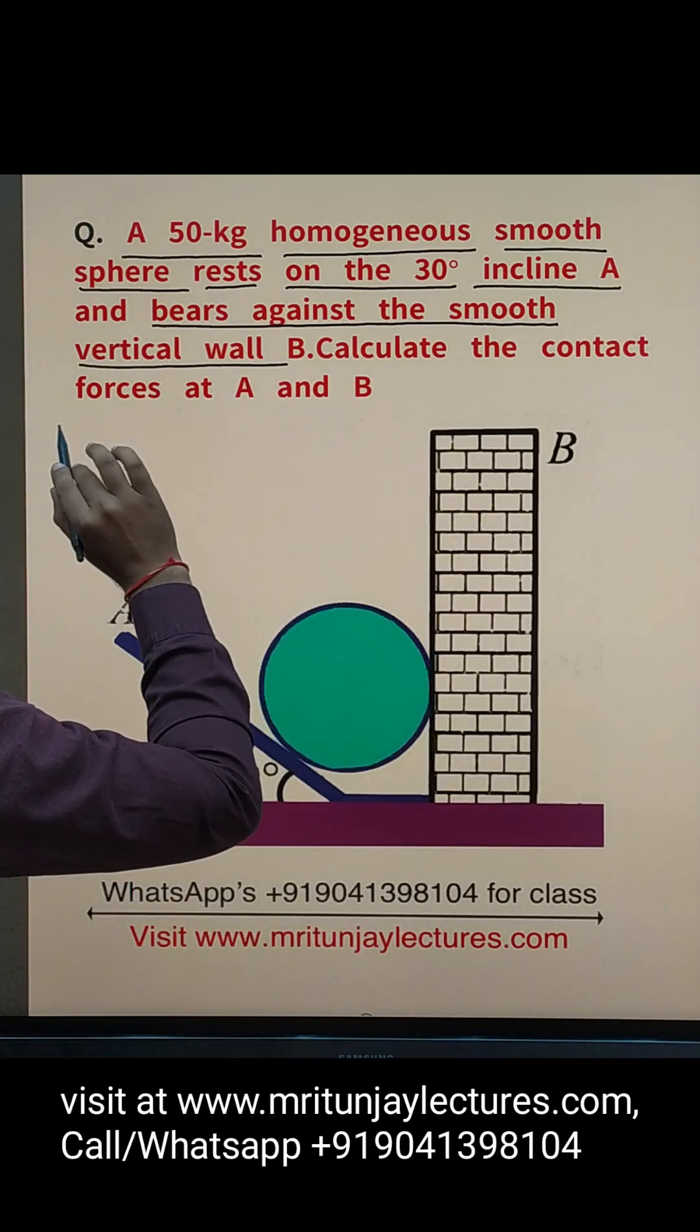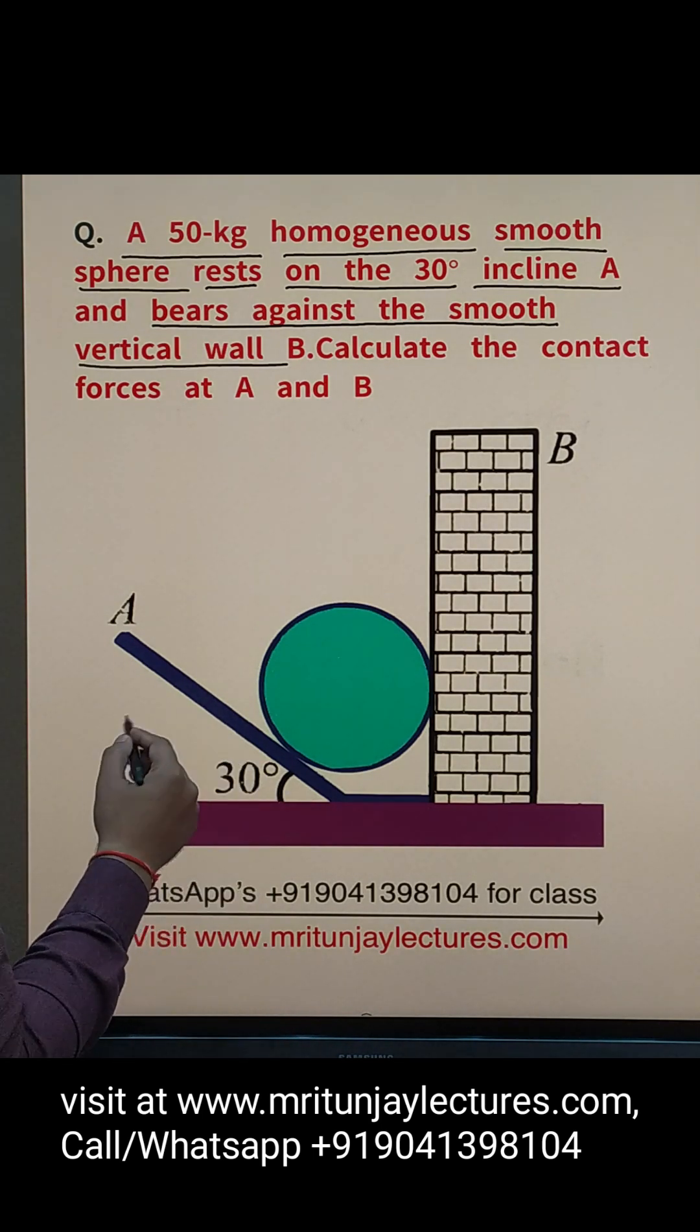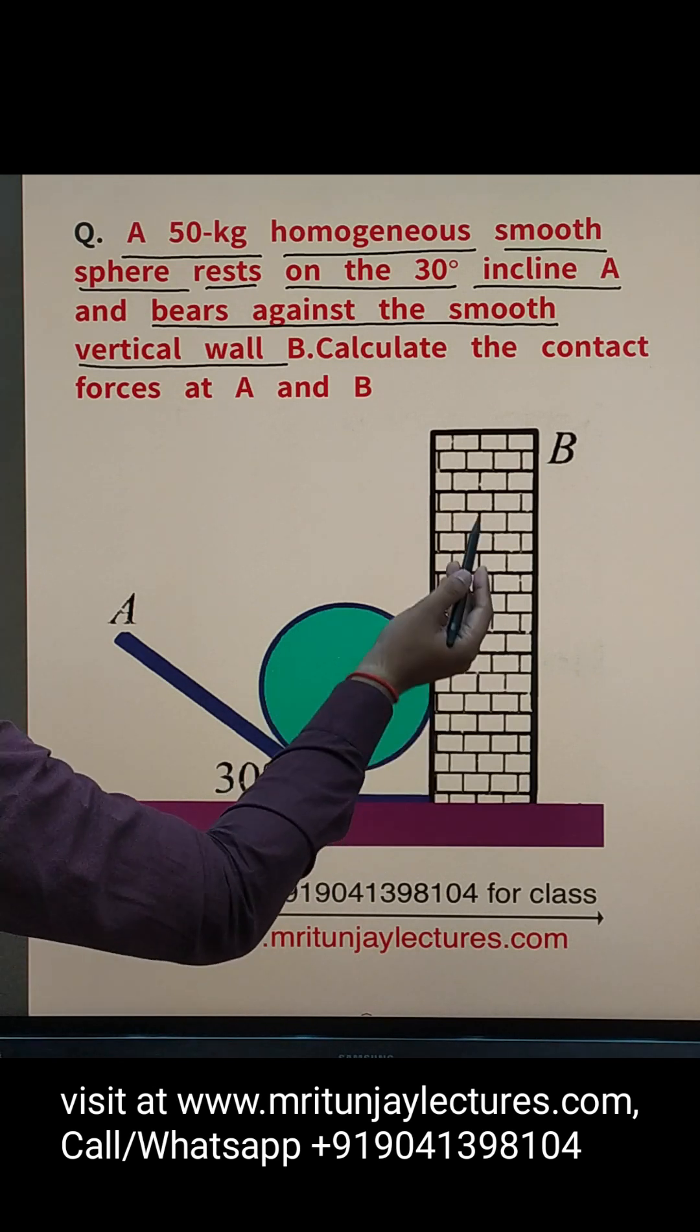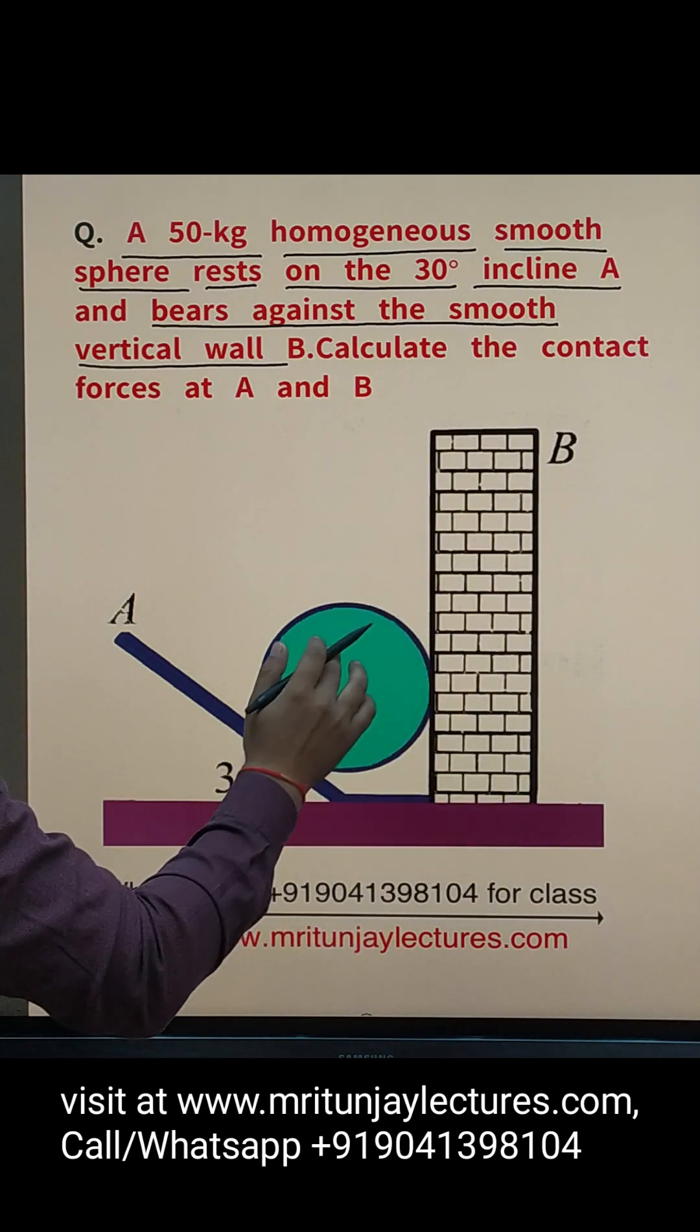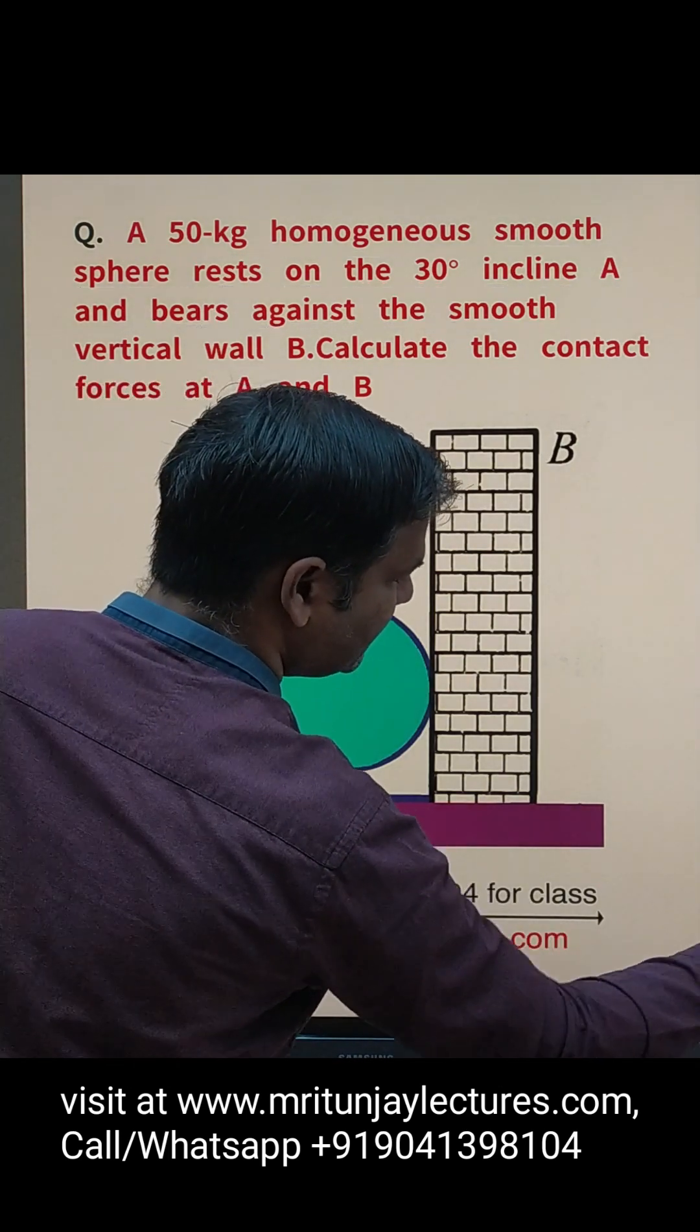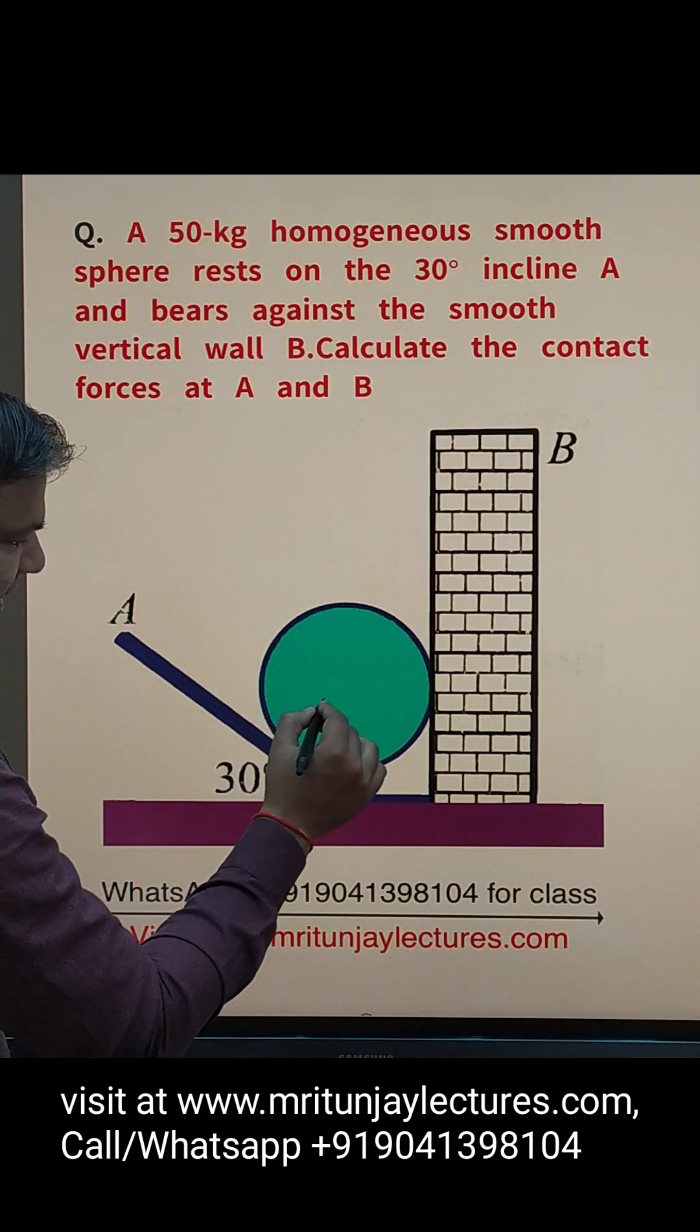Calculate the contact forces at A and B. So our motive is to determine contact forces corresponding to incline A on the sphere and wall B on the sphere. So how can it be determined? First of all, make the free body diagram of that sphere.